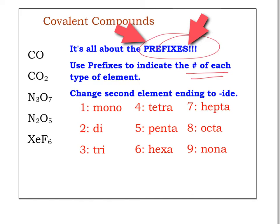We're also going to change the second element's ending to '-ide' when we're done. Here are the prefixes listed: 1 = mono, 2 = di, 3 = tri, 4 = tetra, 5 = penta, 6 = hexa, 7 = hepta, 8 = octa, and 9 = nona.